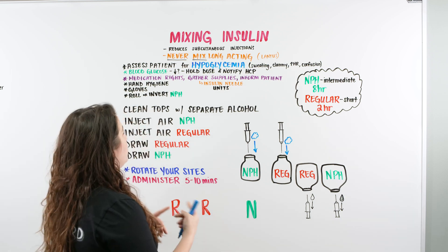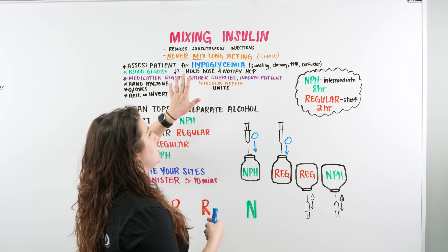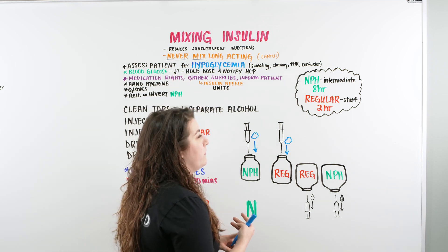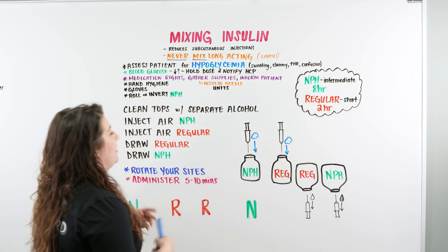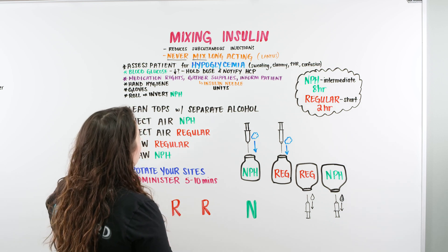We're going to make sure our blood sugar is good, check our blood glucose. We're going to see if they have any signs of hypoglycemia like sweaty, clammy, increased heart rate or confusion. Typically, patients will say something like, I feel off or my sugar feels weird. Can you check my sugar?